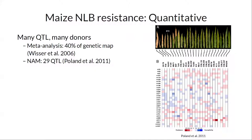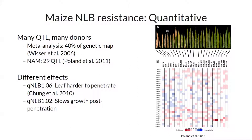Most of the QTL loci have diversity across most of the germplasm. Chao Lan Chung did really interesting work with QTL isolines showing that QTLs also have different effects. She was working with two QTLs isolated from the resistant line Tx303, both on chromosome one but fairly far apart. One basically made the leaf harder to penetrate — fewer canidia could penetrate — but didn't slow their growth. The other slowed growth post-penetration but didn't significantly reduce their ability to penetrate. They're operating at different points spatially, temporally, chemically.